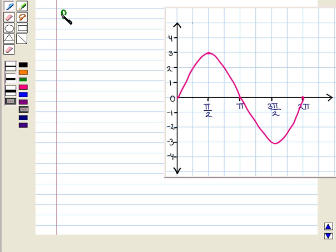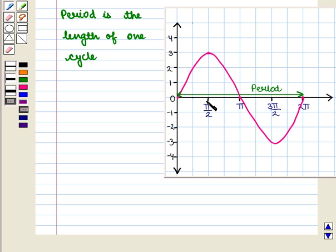Now we know that period is the length of one cycle. Here we can see that length of one cycle is given by 2π minus 0, which is equal to 2π. So we say that period of the function is 2π.